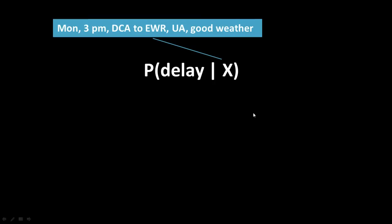In other words, we want the conditional probability that given all of this information, all the predictor information which together I'm simply lumping into this variable called x. So given x, what is the probability of delay?